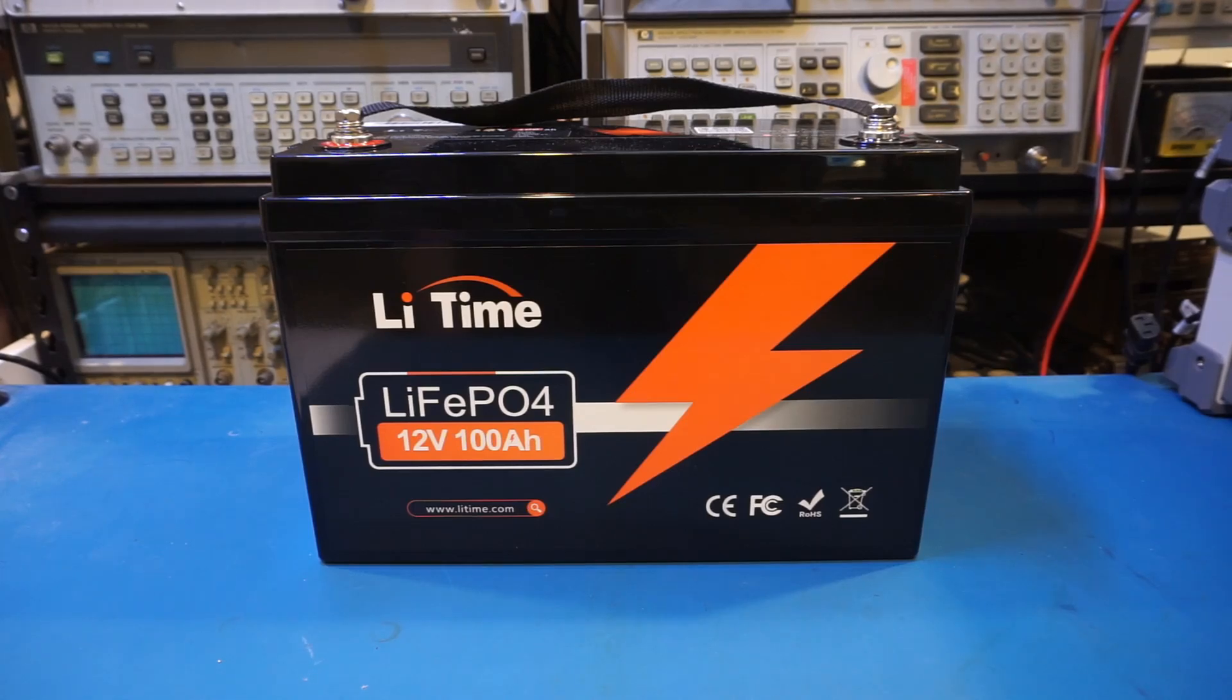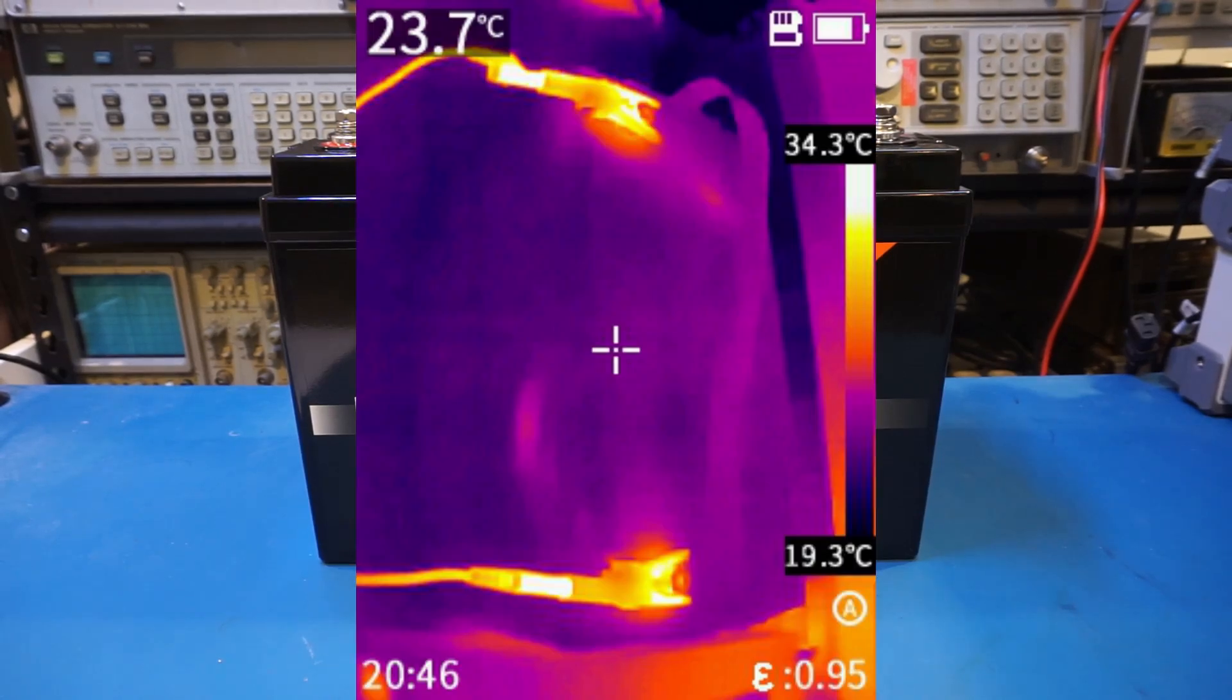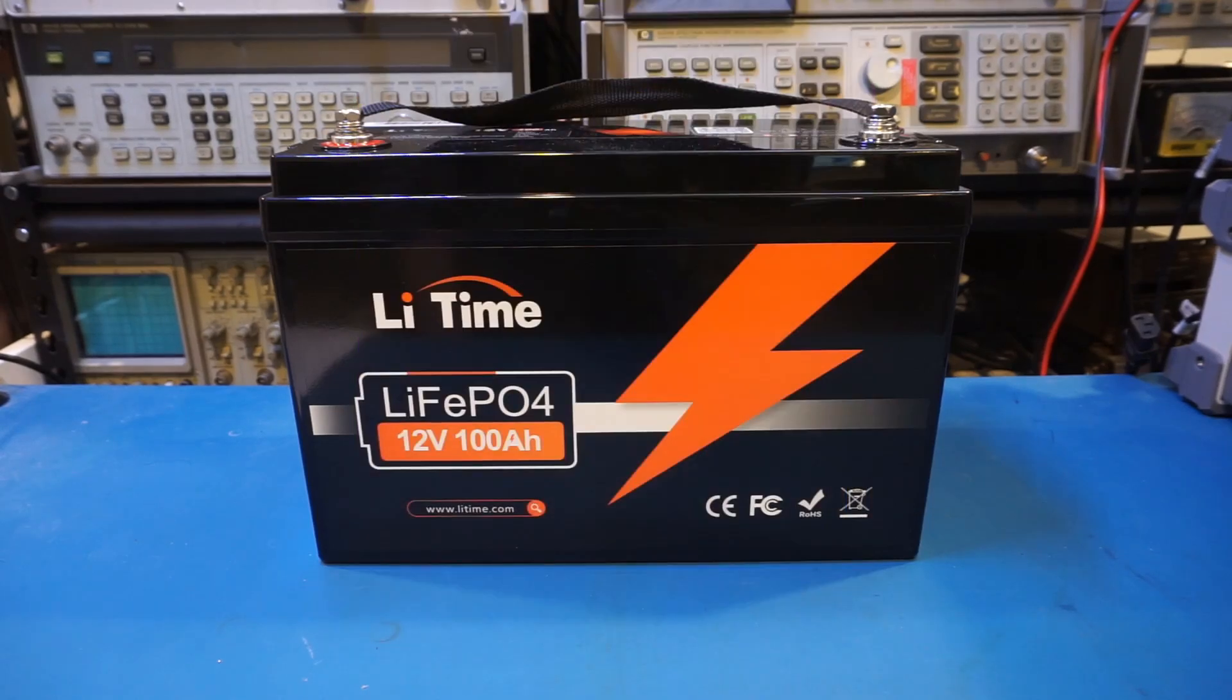The cutoff voltage was set at 14.5V. During the charging cycle, the battery stayed pretty cool. Of course, the 20A charging current is quite modest, and I was not expecting any issue.